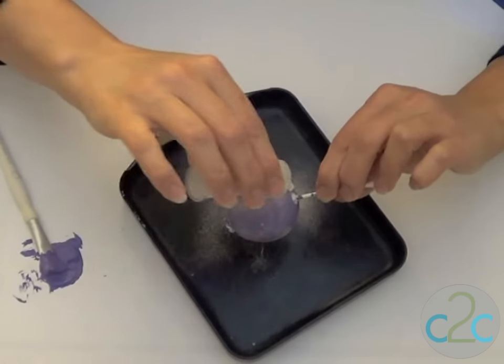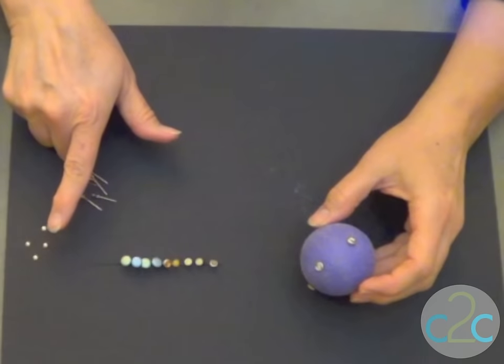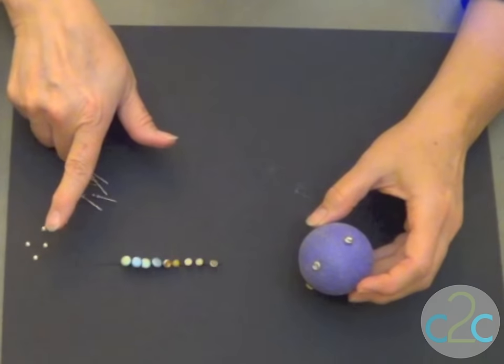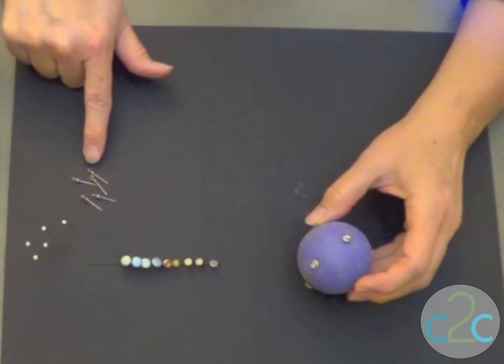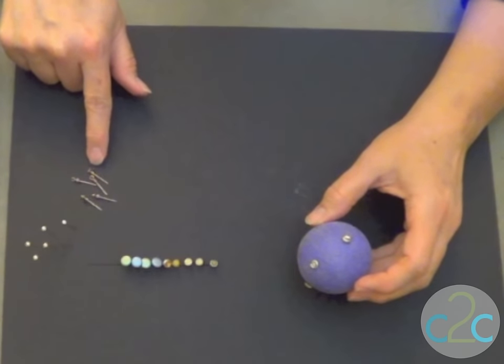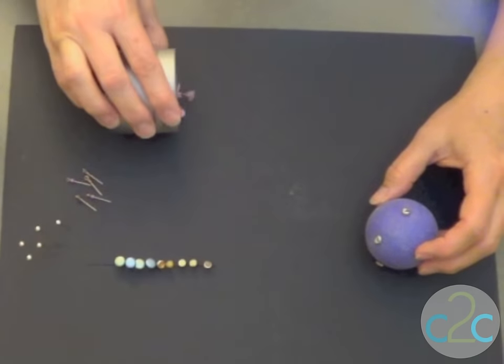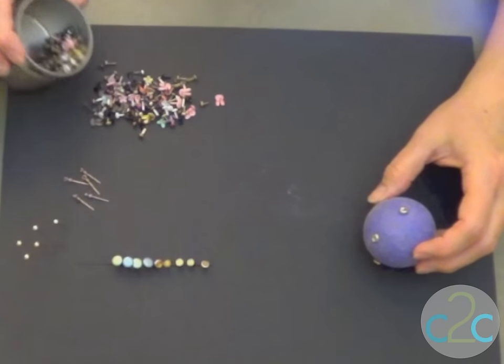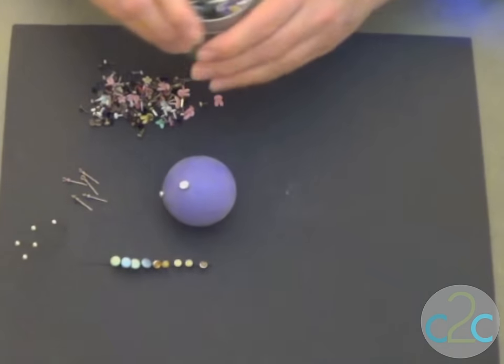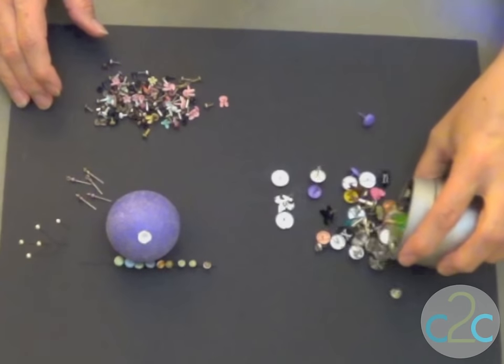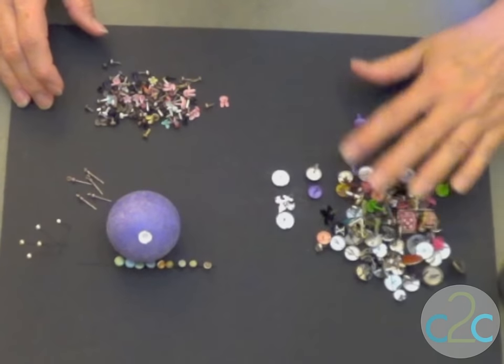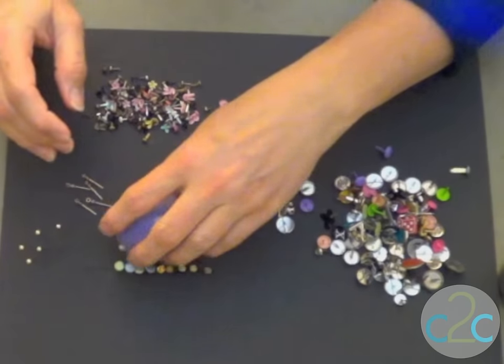We've got some gold ball tip straight pins, we have some adorable little eye pins from jewelry findings with little seed beads on them, we have a lovely selection of mini brads and a lovely selection of medium sized brads with all kinds of different shapes and colors.